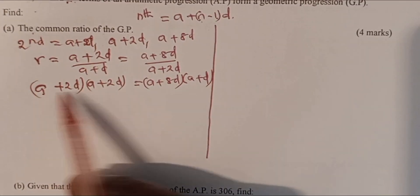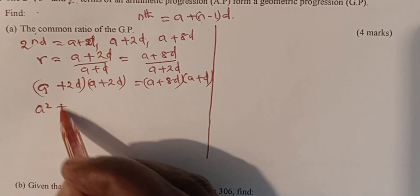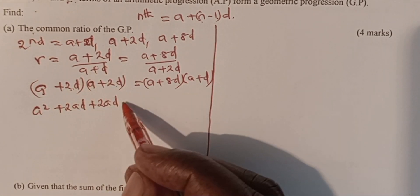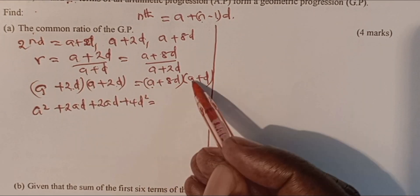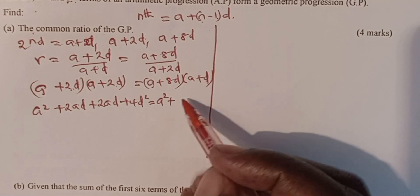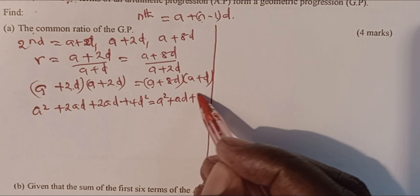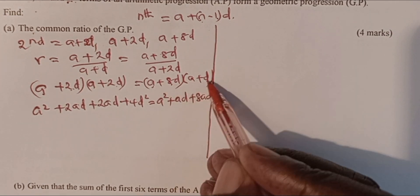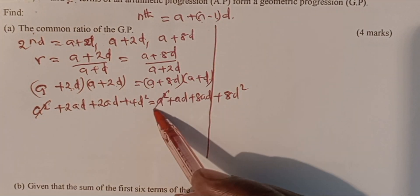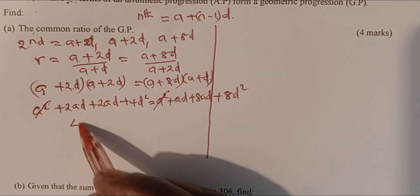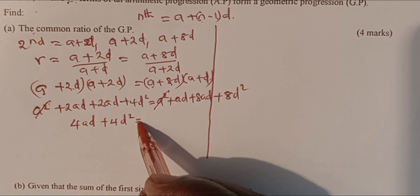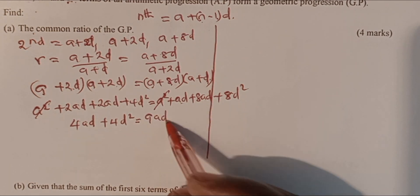Expanding the left side: A squared plus 2AD plus 2AD plus 4D squared, giving A squared plus 4AD plus 4D squared. The right side expands to: A squared plus AD plus 8AD plus 8D squared, giving A squared plus 9AD plus 8D squared. A squared cancels on both sides, leaving 4AD plus 4D squared equals 9AD plus 8D squared.